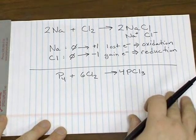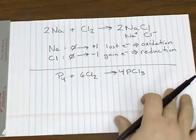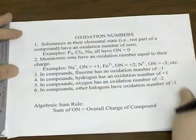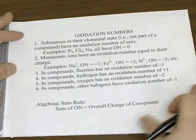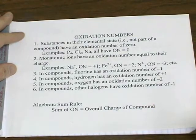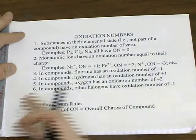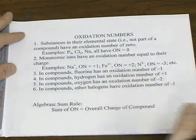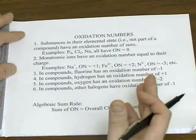So in cases like this, to help us figure out who's losing and gaining electrons, we use these things called oxidation numbers. And what they are are real or fake charges that we simply use to help us figure out who's undergoing oxidation or reduction in a redox reaction.